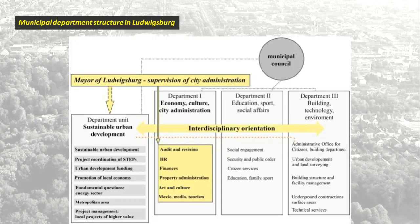But as every strategy and every plan, when it doesn't have some kind of formal structure within the government, it's not obvious that the goals are going to be really executed. So the city set up a completely separate department unit called Sustainable Urban Development, which gathers all urban-related subjects in such a way that really secures the objectives which were commonly set by citizens and all city stakeholder groups. This department unit reports to the mayor of Ludwigsburg as well as the Municipal Council, which enables really quick decision-making, especially when it comes to budget distribution.